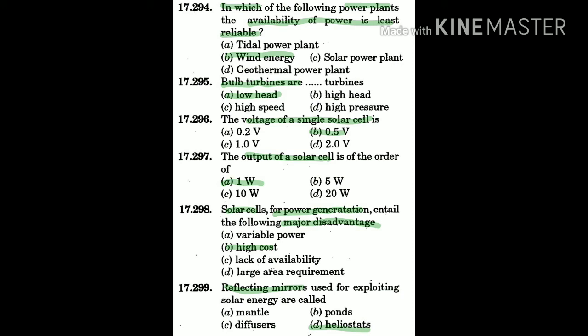Question 297: The output of a solar cell is — the answer is: 1 watt. The voltage of a solar cell is 0.5 volt.